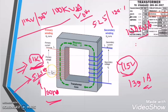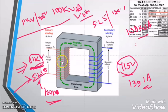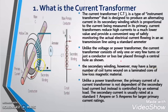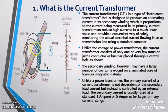An important question arises: are the power transformer and the current transformer the same? The answer is a big no. In the power transformer you will find two windings — one primary and one secondary. But in the current transformer you will find only the secondary winding. The primary winding of the current transformer is that conductor or bus bar whose current we need to measure.